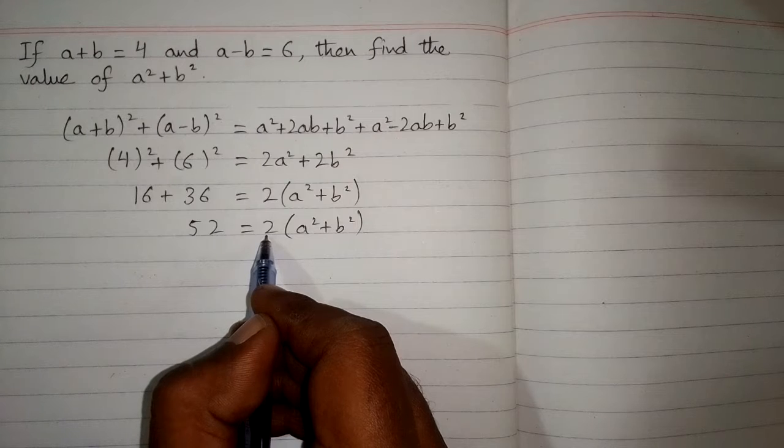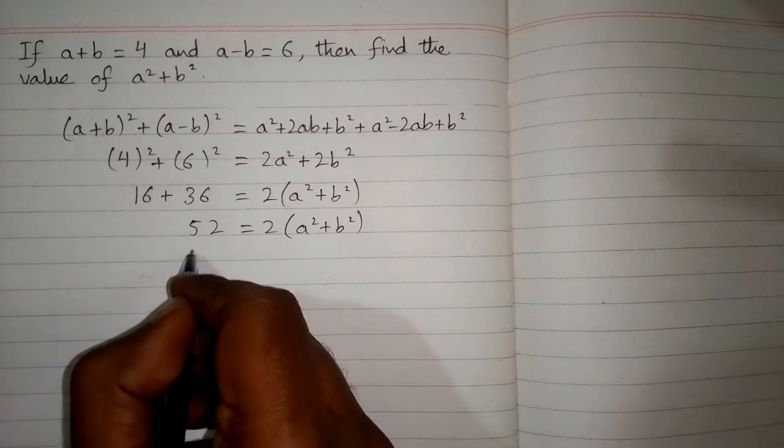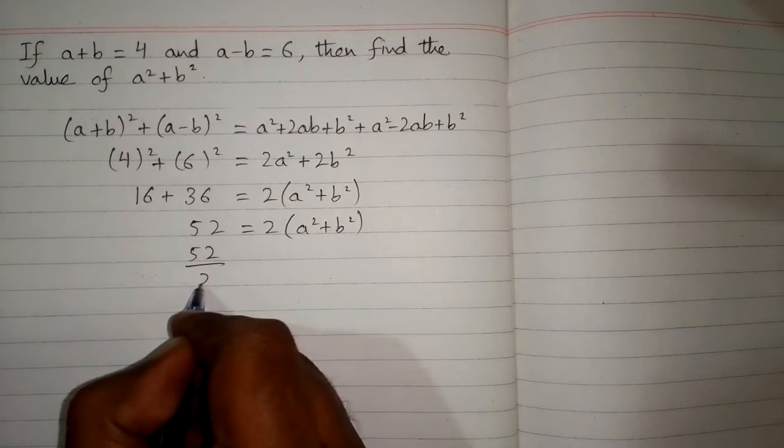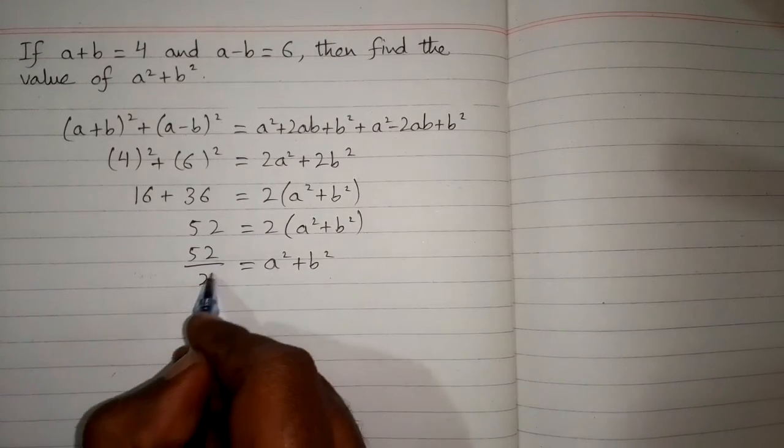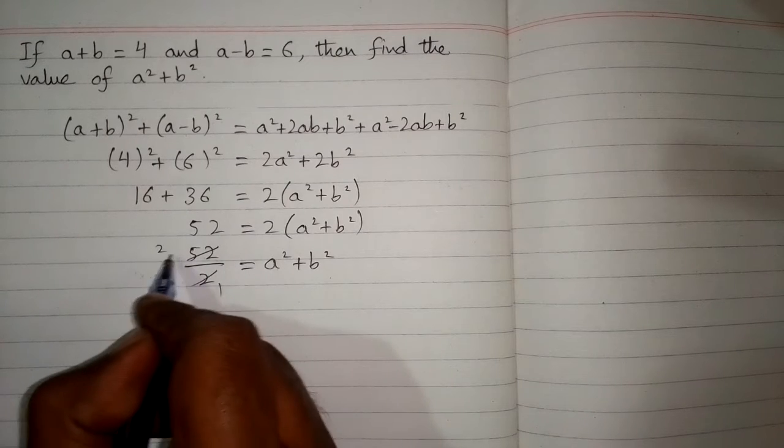Since 2 is multiplying on this side and when we take this 2 on the other side of equation it will divide 52 so we have 52 upon 2 is equal to a square plus b square.